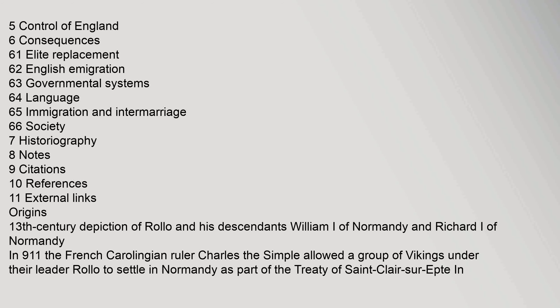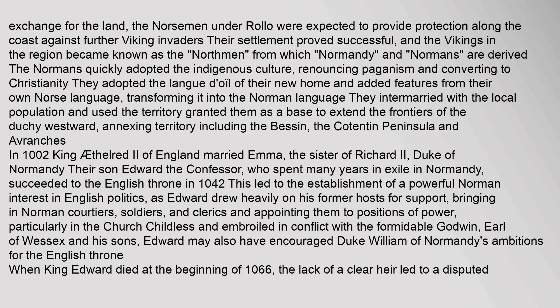In 911, the French Carolingian ruler Charles the Simple allowed a group of Vikings under their leader Rollo to settle in Normandy as part of the Treaty of St. Clair-sur-Epte. In exchange for the land, the Norsemen under Rollo were expected to provide protection along the coast against further Viking invaders. Their settlement proved successful, and the Vikings in the region became known as the Northmen, from which Normandy and Normans are derived. The Normans quickly adopted the indigenous culture, renouncing paganism and converting to Christianity.